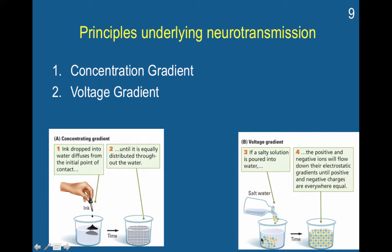When you pour the solution in, it will be more concentrated, and over time it will spread out. The ions are initially clumped together with some negative and some positive, however they were poured in. But over time they naturally distribute so that you have an alternating pattern of positive and negative. The positive and negative charges will be equally distributed everywhere and balanced with respect to each other. This is what's known as a voltage gradient.